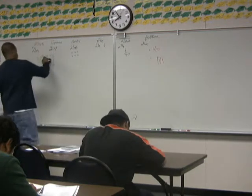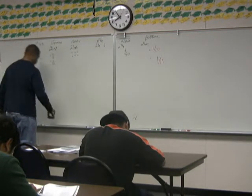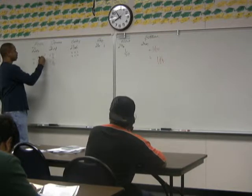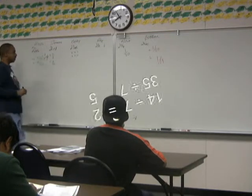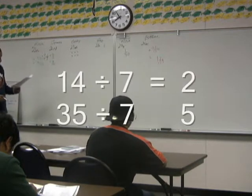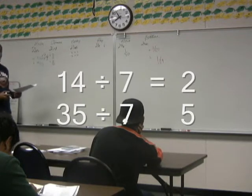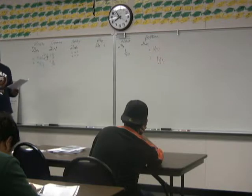We reduce 14 to 35 by 7, and we get 2 to 5. So you have 2 nonunion workers for every 5 union workers.